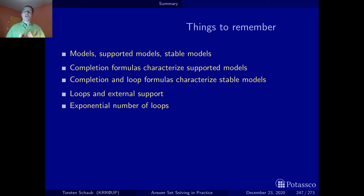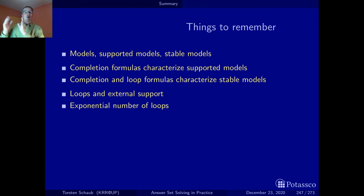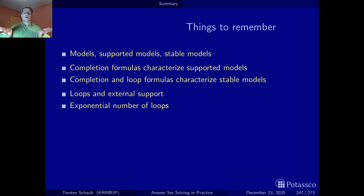Hence, we can also characterize the stable models simply in terms of loop formulas. The reason why this is not often done is because the loop formulas are actually the source of an exponential blow-up. Having things pulled apart — here are the completion formulas, and there are only polynomially many, linearly many in terms of atoms and rules — this is more or less the polynomial part, while the exponential part is where there is an exponential number of non-trivial loops, and we have to handle them with care.